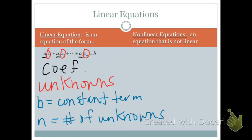We say that b is our constant term and n is the number of unknowns in this equation.